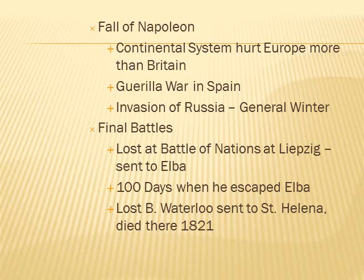The fall of Napoleon: the Continental System hurt Europe more than Britain. Guerrilla wars in Spain drained time, energy, and manpower. Napoleon's invasion of Russia was defeated mainly by General Winter, which killed a huge percentage of his army. His final battles were lost at the Battle of Nations at Leipzig. He was sent to the island of Elba. The Hundred Days was when he escaped Elba and returned to rule, but then he lost the Battle of Waterloo and was sent to St. Helena, where he died in 1821.